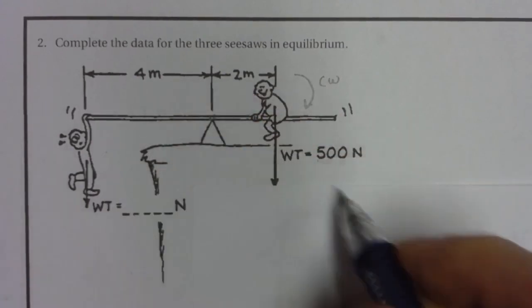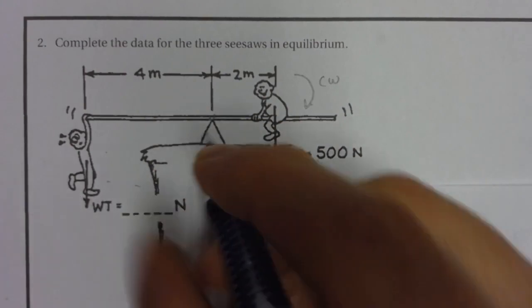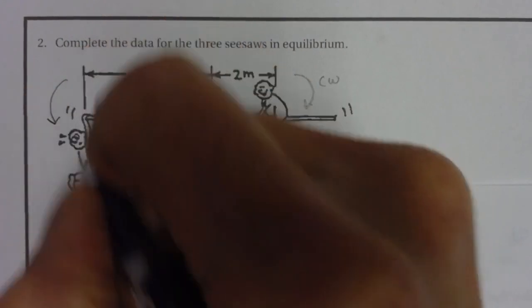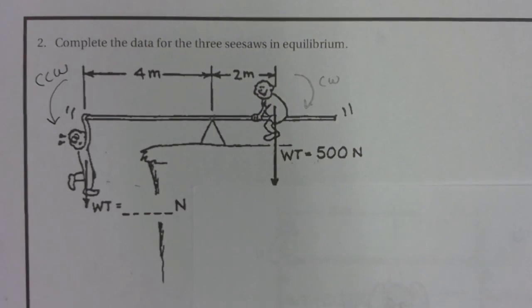This guy is going to cause the rotation to be counterclockwise, so they are causing opposite rotational directions. In order to stay balanced, the weights don't have to be balanced—the torque has to be balanced.